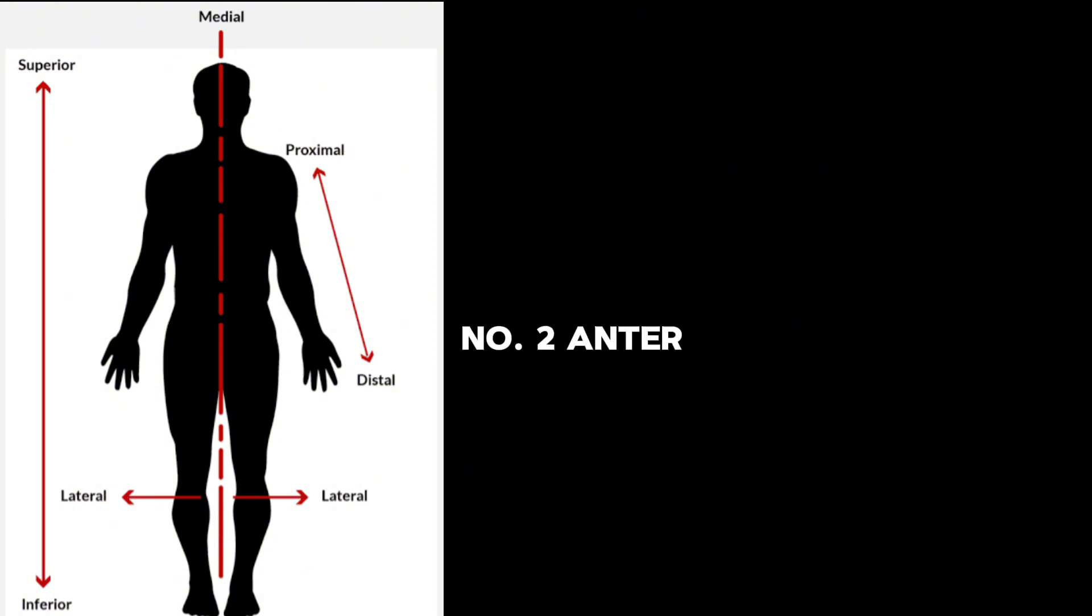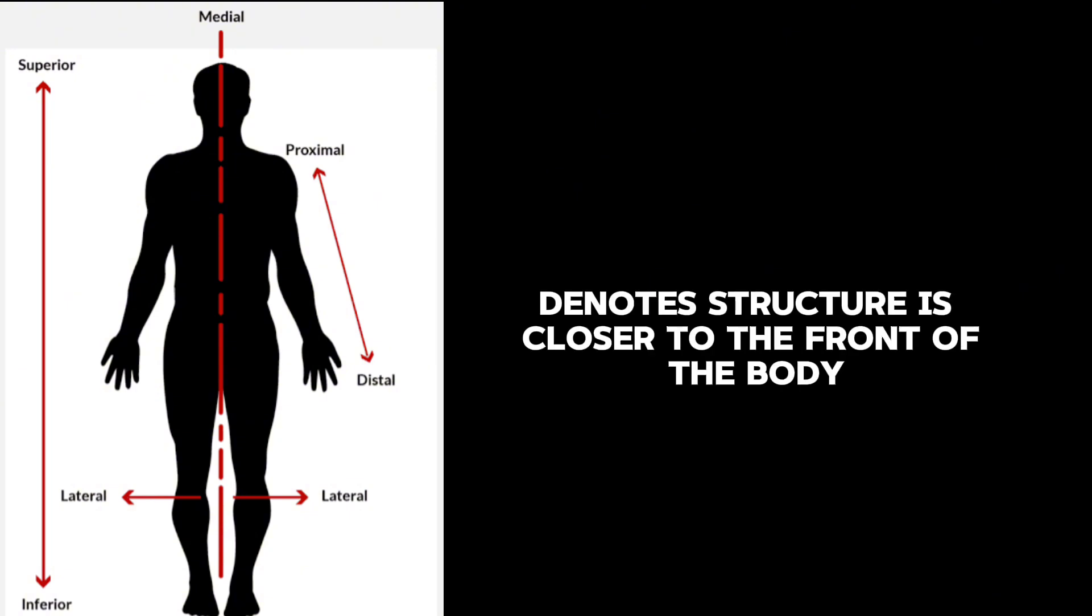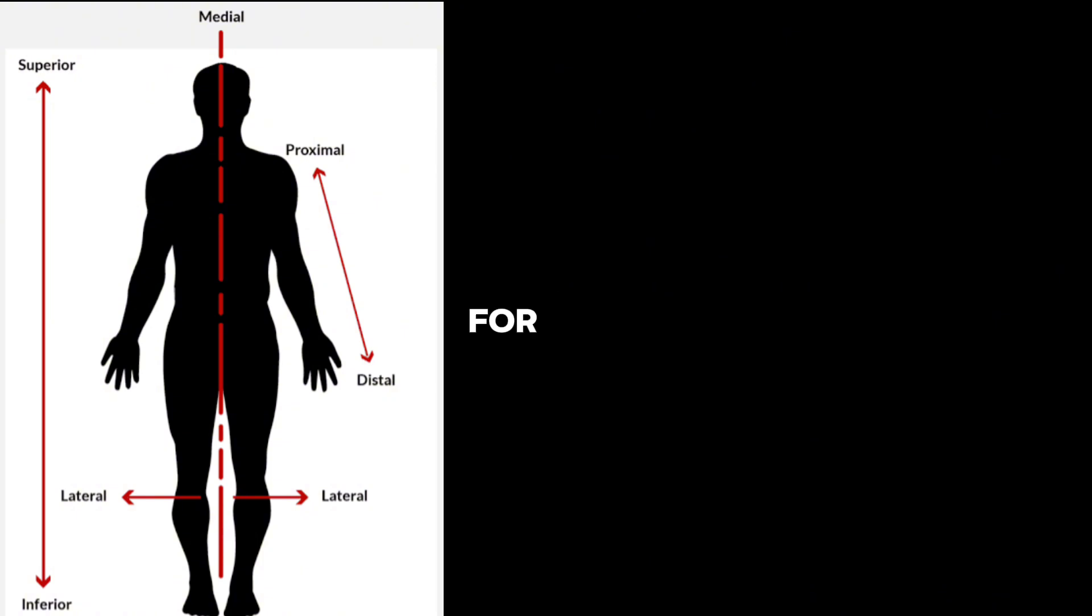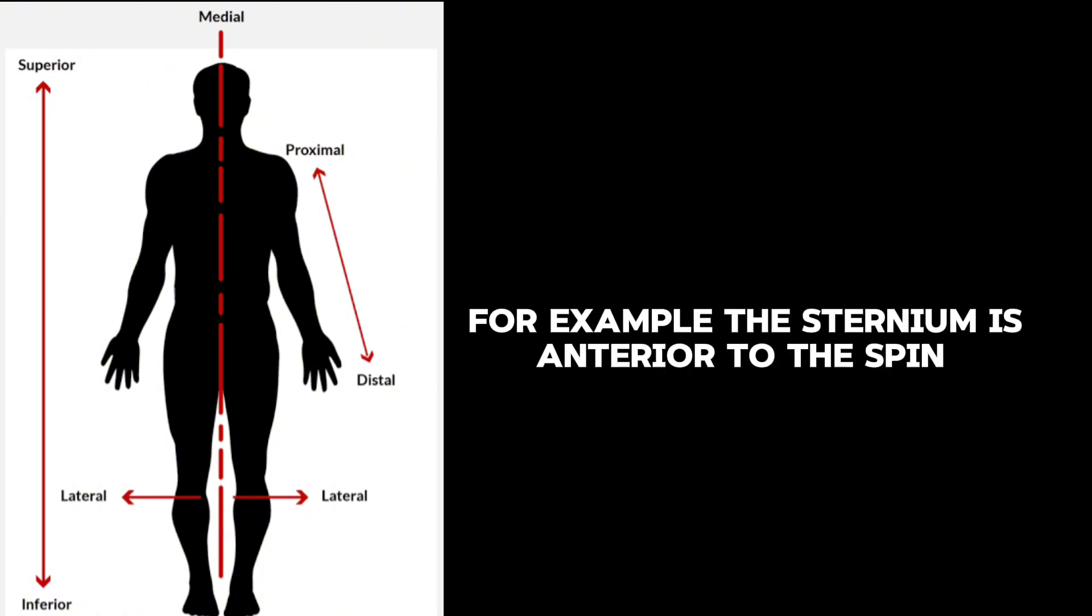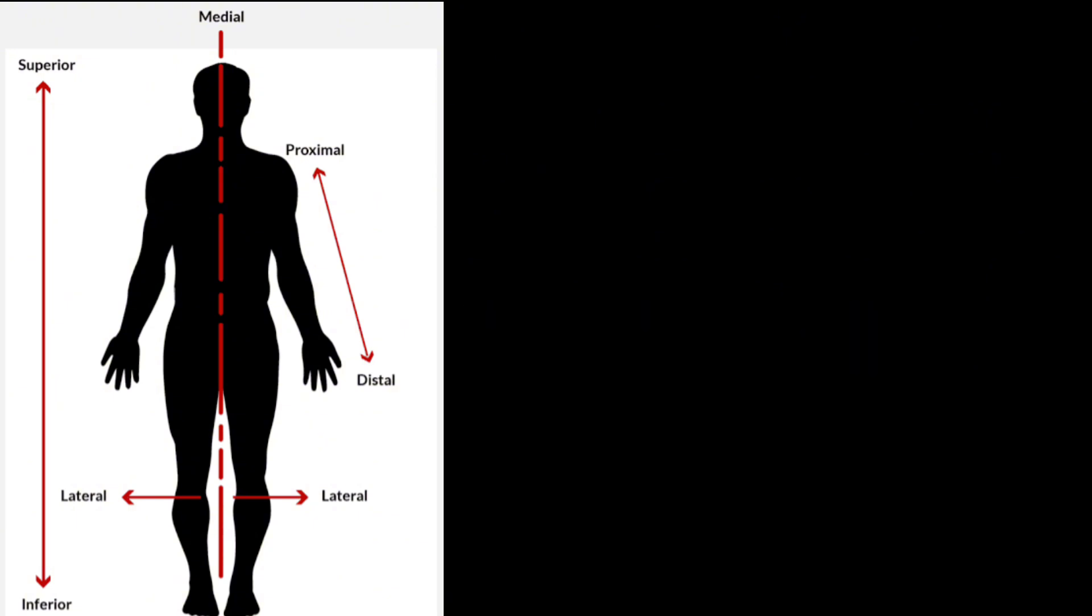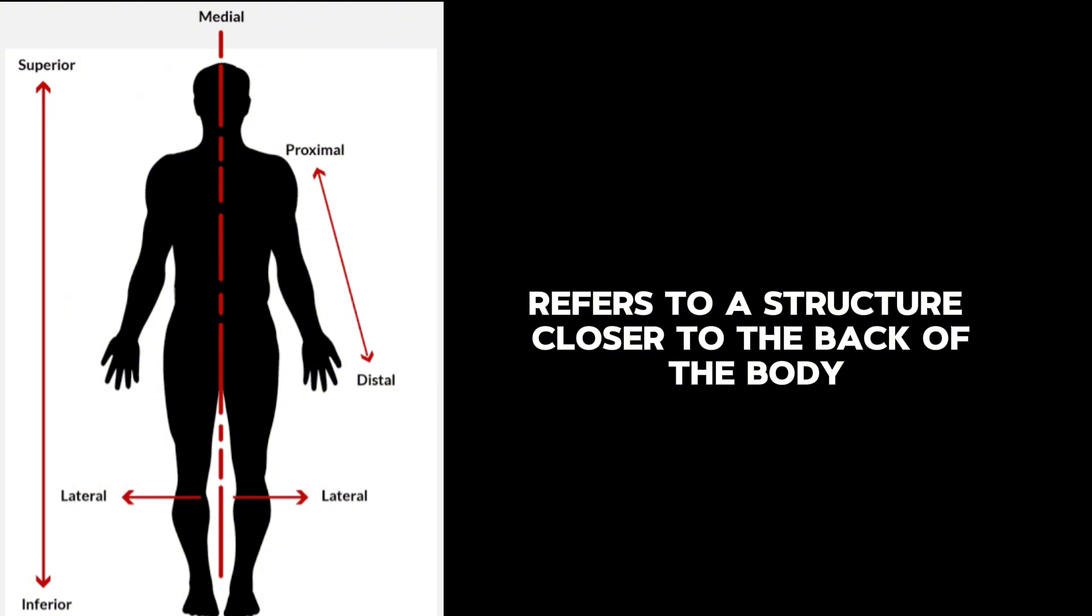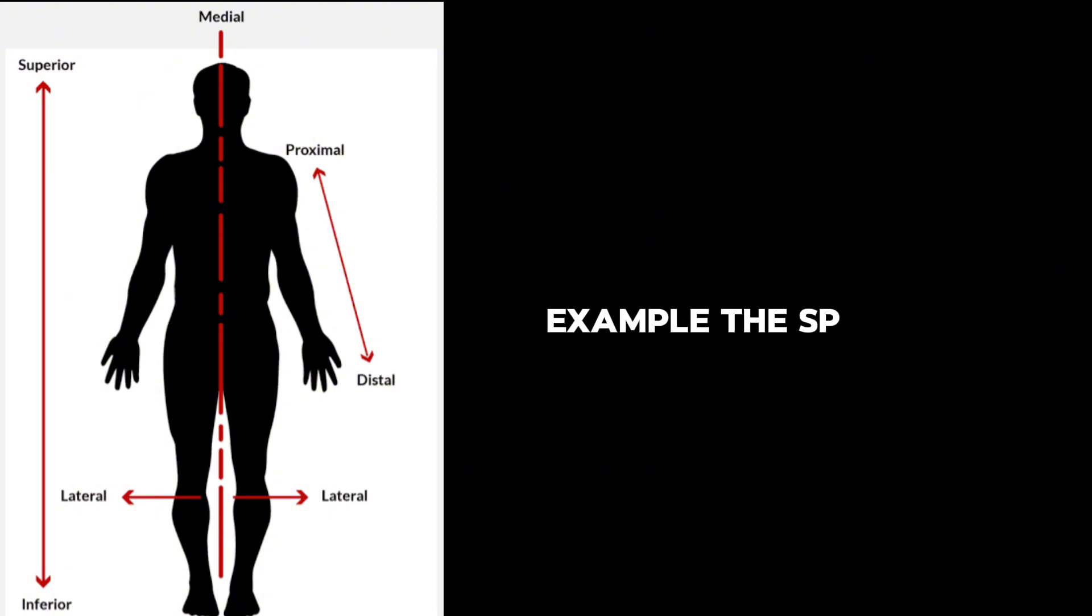Number two: anterior and posterior. Anterior, also called ventral, denotes a structure is closer to the front of the body. Example: the sternum is anterior to the spine. Posterior, also called dorsal, refers to a structure closer to the back of the body. Example: the spine is posterior to the heart.